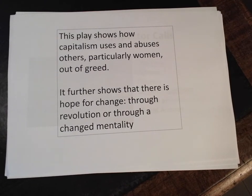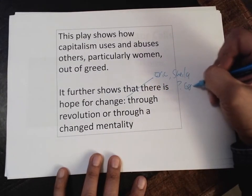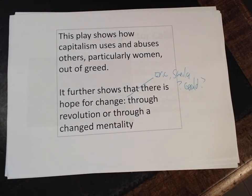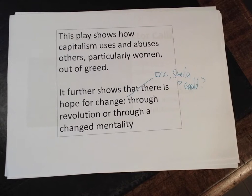Ultimately, the play shows how capitalism uses and abuses others — particularly women — out of greed. It further shows there is hope for change, and we see that in Eric, Sheila, and possibly Gerald. Gerald is a real halfway house figure: the inspector kind of celebrates Gerald for how he treated Eva Smith, and there's some sense that Gerald might reconcile with Sheila. Sheila says 'it's the first time I've seen you honest.' On the other hand, Gerald is the one who says the inspector is fake and seems unmoved by the fact they've done something wrong. The inspector's great speech about everyone being responsible for each other — millions of Eva Smiths and John Smiths — says this narrative is the story of our society. Everyone is going through this.